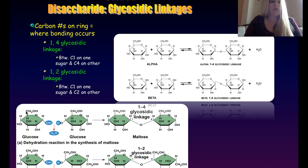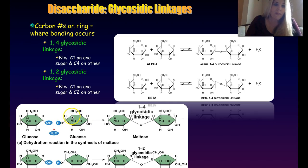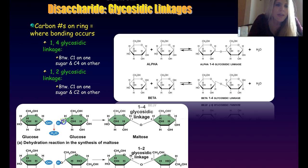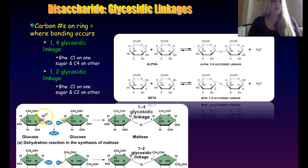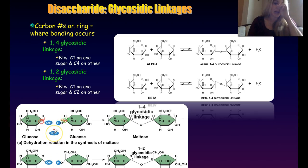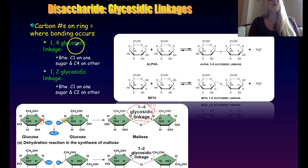Let's look at exactly where the glycosidic bond forms in maltose. Carbon number one of the first glucose has a hydroxyl group. On the second glucose, numbering its carbons one, two, three, four, five, six — carbon number four is right here. We take the hydroxyl group off carbon one of the first glucose and the hydrogen off carbon four of the second glucose to make water, forming the glycosidic linkage between carbon one and carbon four.